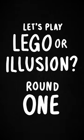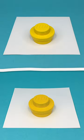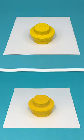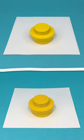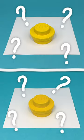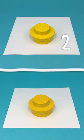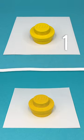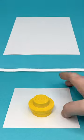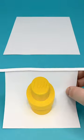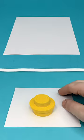Let's play Lego or Illusion. One of these objects is Lego, and the other an optical illusion. But which is which? That's right, it's a 2D anamorphic illusion.